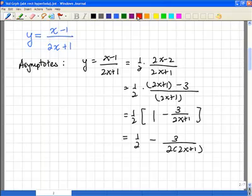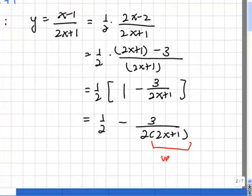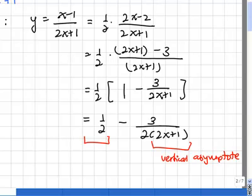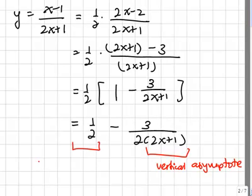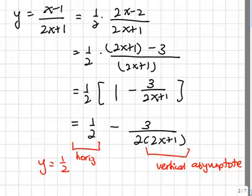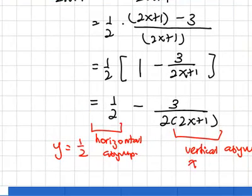So we have already seen that the constant part here gives the horizontal asymptote, where the equation of this asymptote is given by y equals to half. And for the vertical asymptote, as we discussed, the equation is given as x equals to negative half.